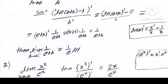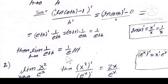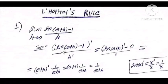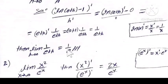Now substitute: the limit of 1 over (e+h) as h tends to 0. Then h tends to 0 means e plus 0 equals e, therefore the answer is 1 over e. Therefore the limit of ln(e+h) minus 1 over h, as h tends to 0, is equal to 1 over e.